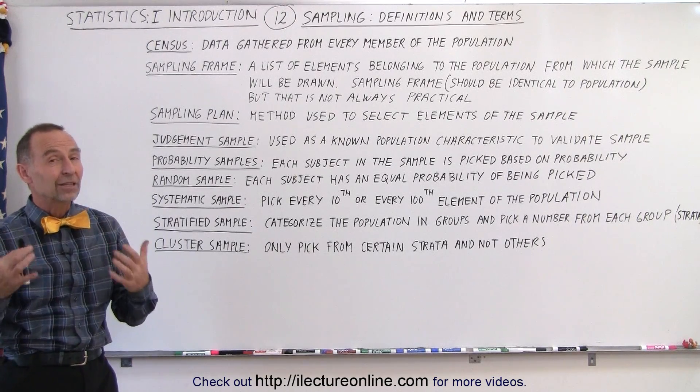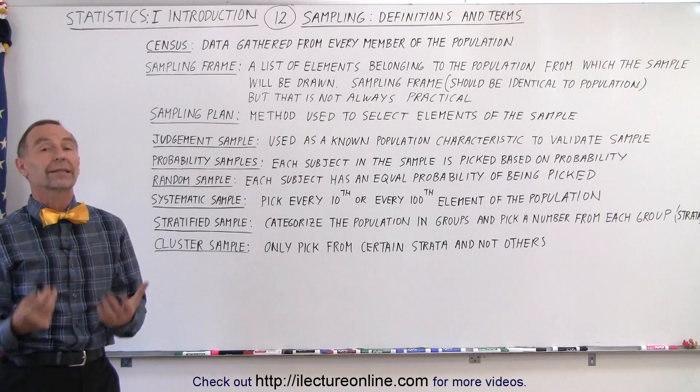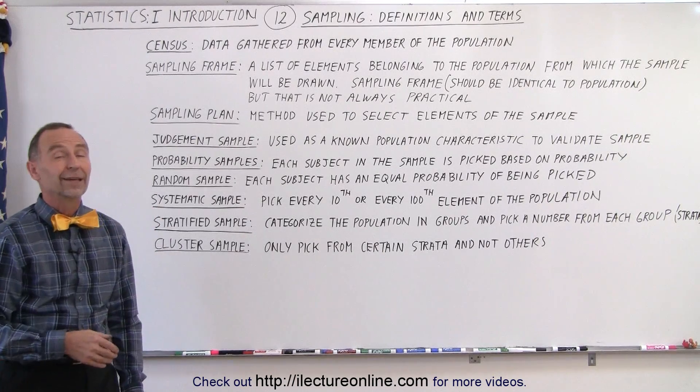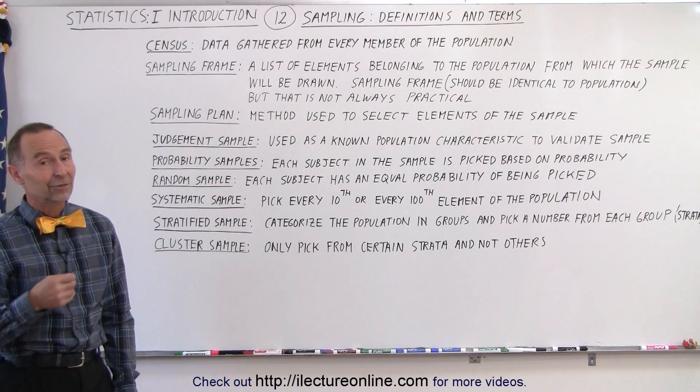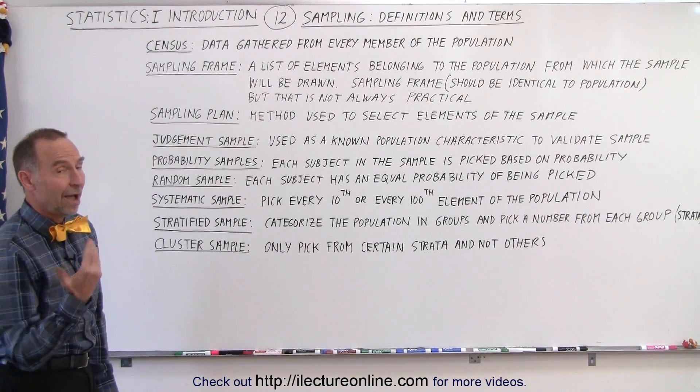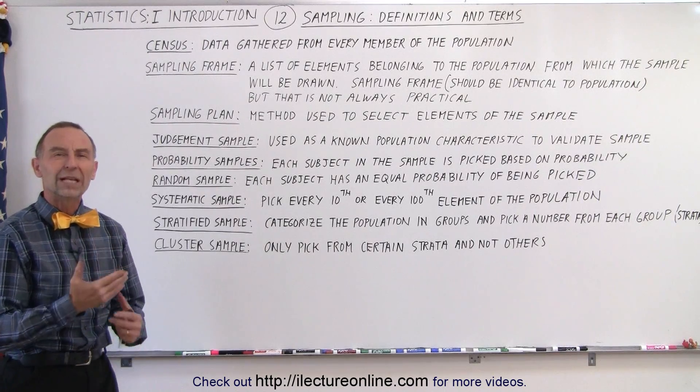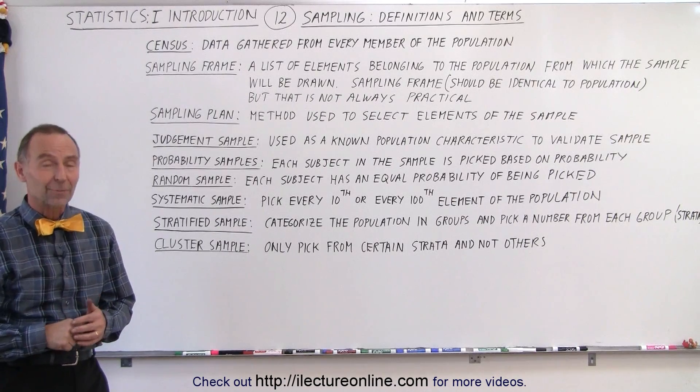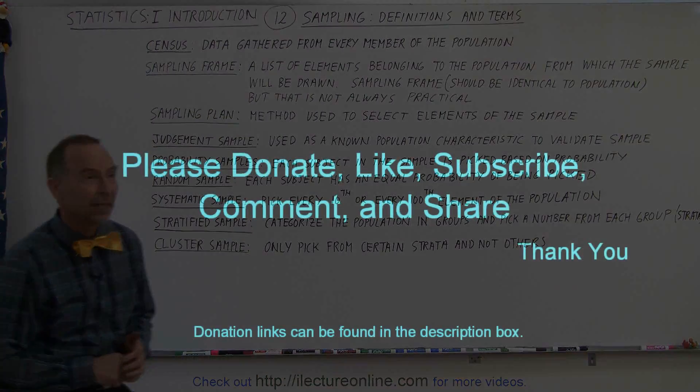So you can see a lot of thought needs to be put into how you're going to collect data. And then you can also see that the results of a survey can really depend on that. And so when you listen to the results of a survey, you have to wonder, how did they pick the sample? Is it really representative of the whole population? And that is how it's done. Thank you.